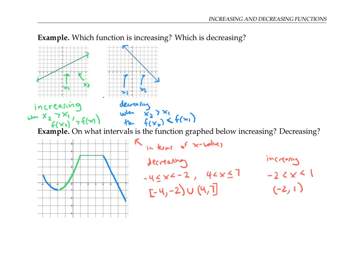I'm going to modify my graph just a little bit now by putting arrows on the end. When I have arrows instead of dots or hard stops, that signifies that the function continues in the same direction forever.